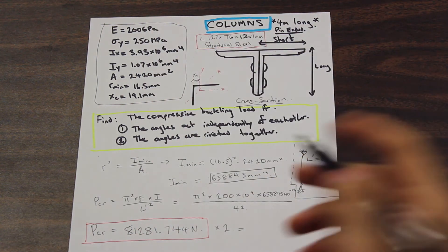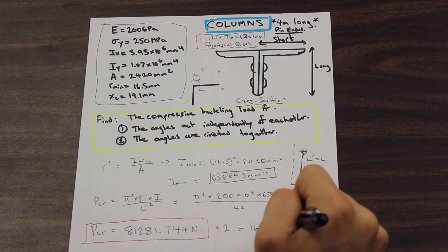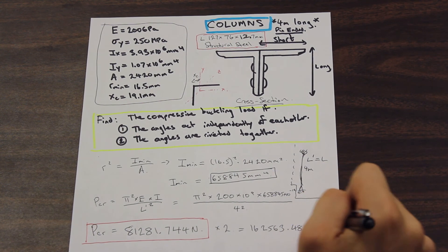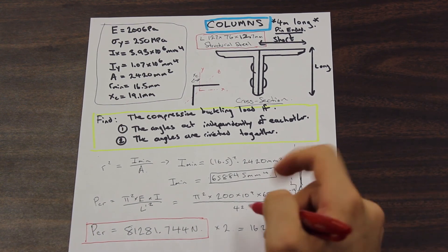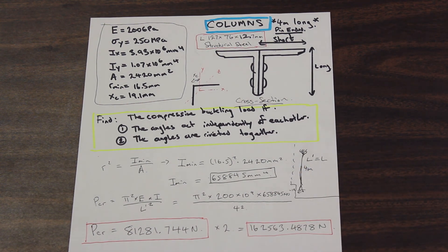And we're going to find the critical buckling load for our cross section, or for our column. So just put that in your calculator. You should get 162,563 newtons. So that's the critical buckling load. That's the maximum load we can apply actually on the column before it fails due to buckling. And that's the first part of the question, come back for the second one, and we'll see what happens when we rivet the angles together, and how much load we can apply. All right. Thanks for watching.